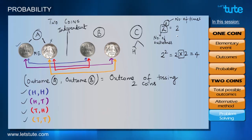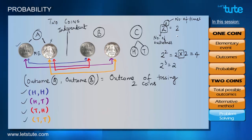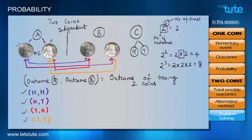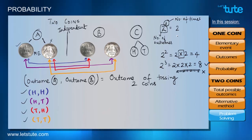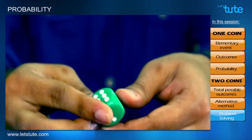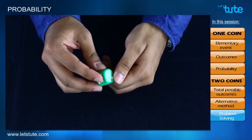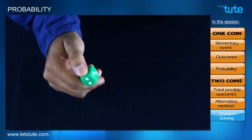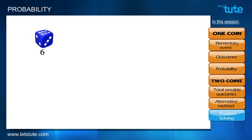For three coins — say coin C, which again has heads and tails — the total possible outcomes are 2 raised to power 3, equal to 2 × 2 × 2 = 8, and not 2 + 2 + 2 = 6. For a single die with six sides, the six possible outcomes are 6 raised to power 1.